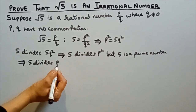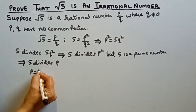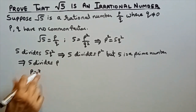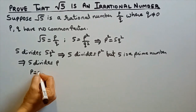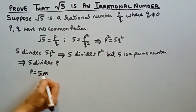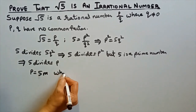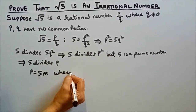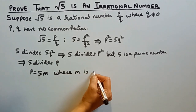Since 5 is a prime number, this again implies that 5 divides p. Now we'll assume that p is some number — say p is equal to 5m, where m is an integer.